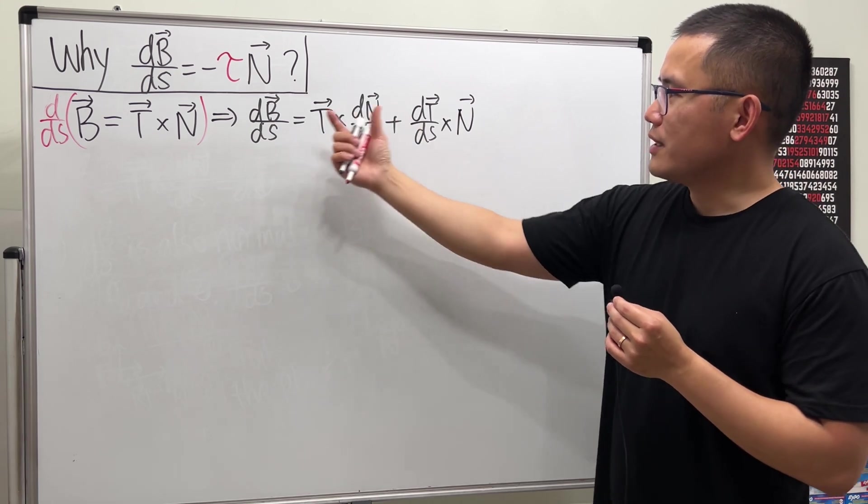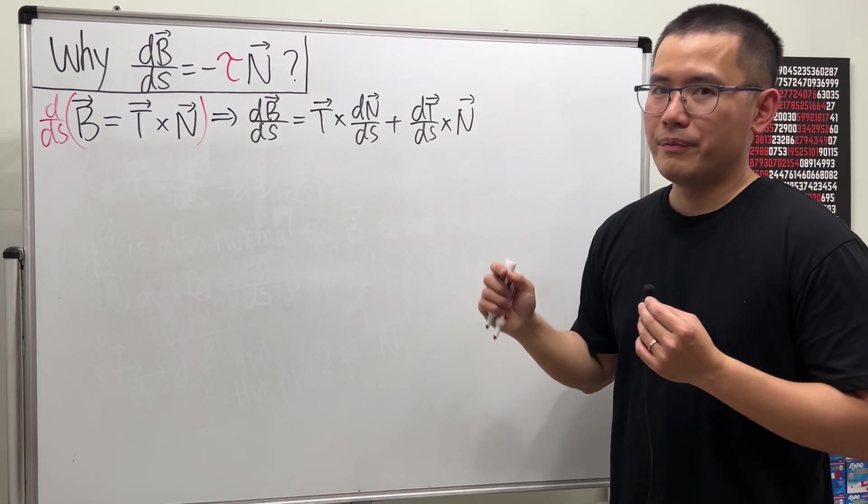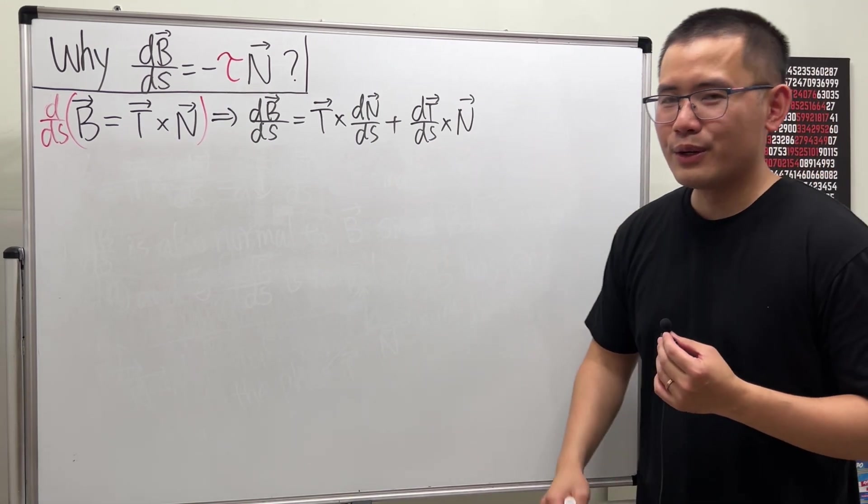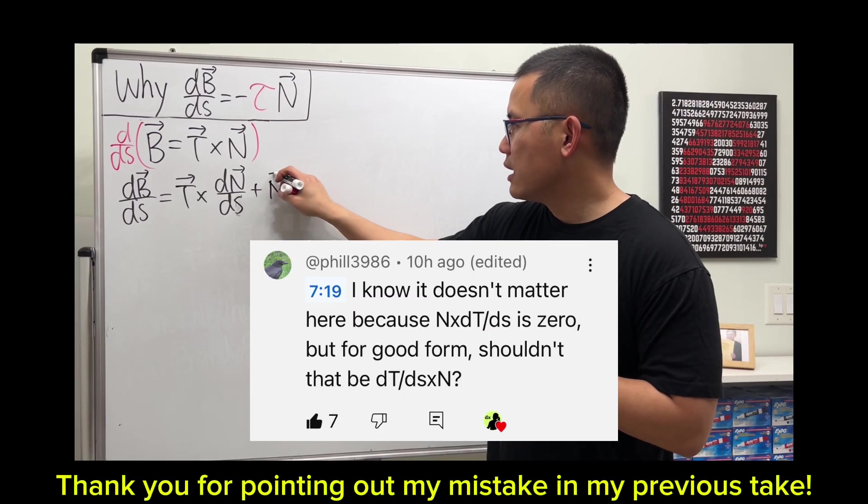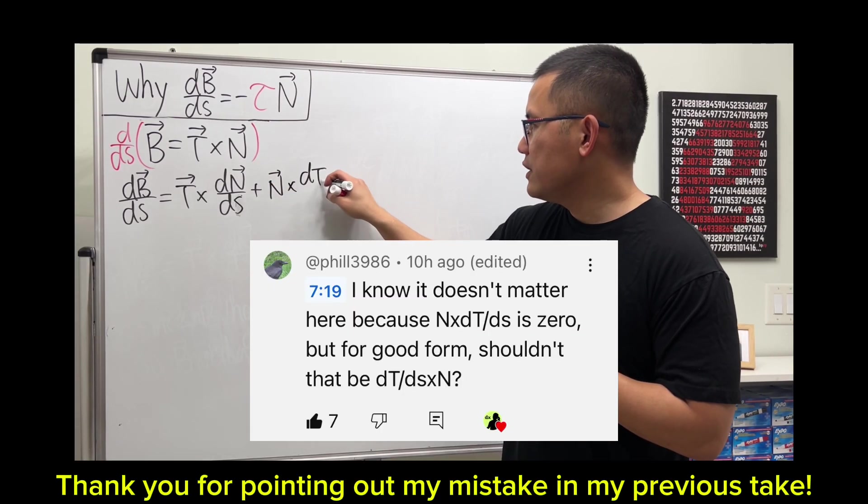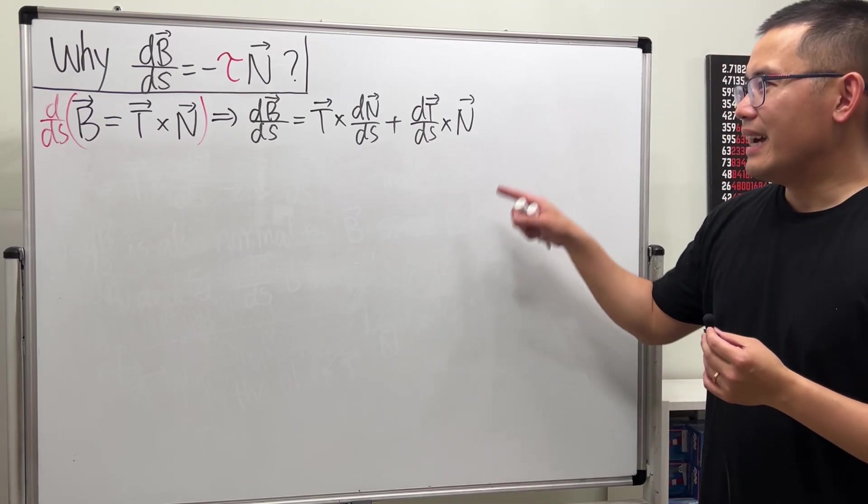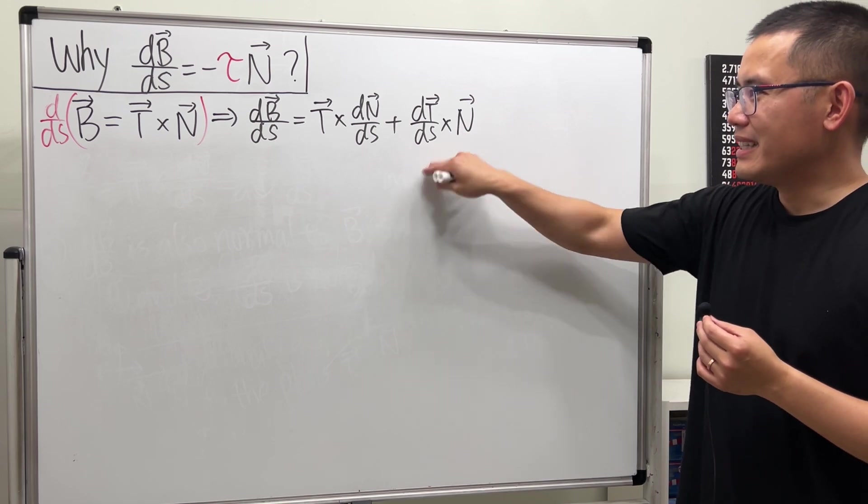Of course, the order of the addition doesn't matter, but the order of the cross product right here and right here, they matter. And in fact, I made a mistake in a previous video, so thanks to my viewer who pointed this out to me. The second one, do the cross product with the derivative of the first, also with respect to s. And that's why I'm remaking this part, because I want to make sure I get this right for you guys.